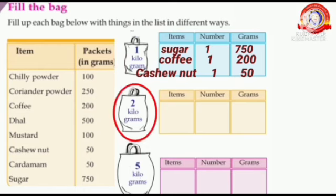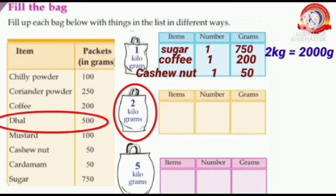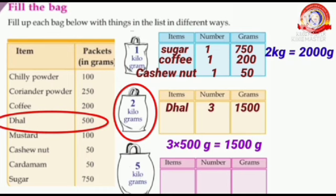Now see the next bag — we have to fill a 2 kilogram bag. Two kilograms equals 2000 grams. First, let's take dhal. One packet of dhal weighs 500 grams. Here we take three packets of dhal. Three times 500 grams equals 1500 grams.